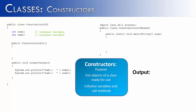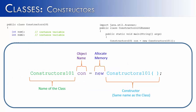Let's look at initializing variables. The instance variables we're going to initialize are num1 and num2, with num1 assigned to 10 and num2 assigned to 20. Let's see how this works with our Constructors101Runner. In order to use the Constructors101 class, we're going to have to create an object of that class: Constructors101 con equals new Constructors101. And now I would like to call the method — but in all reality, I've actually already called the constructor.